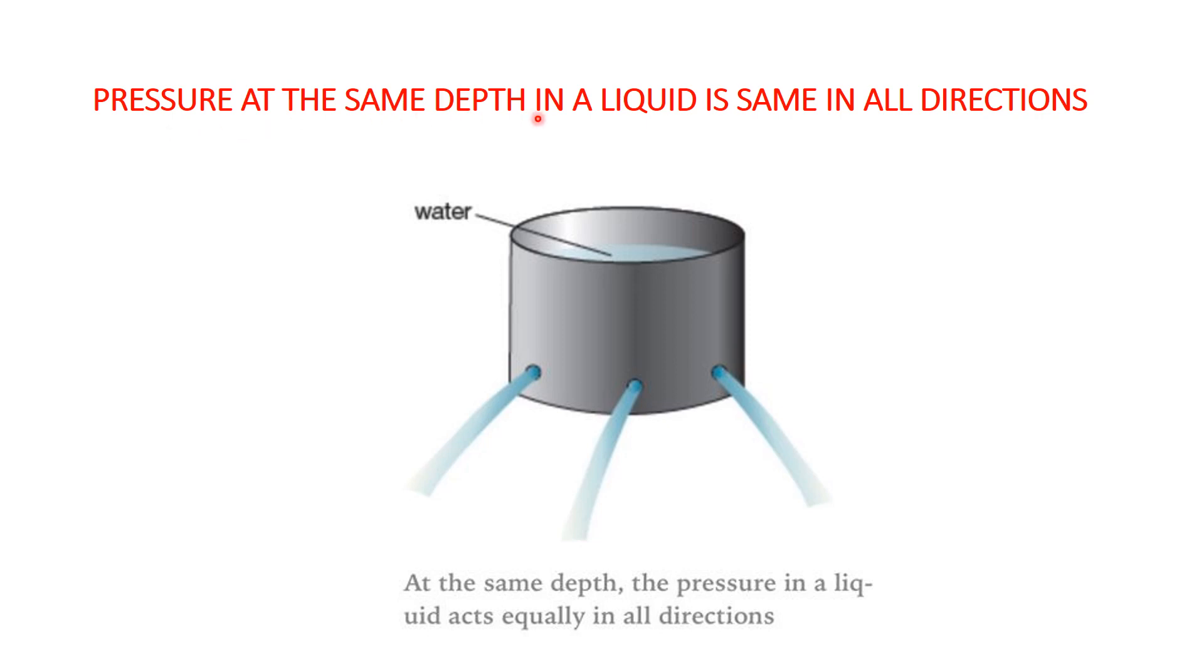Now the second activity shows that pressure at the same depth in a liquid is same in all directions. Take an empty tin can and make several holes round the tin can. Make sure that the holes are at the same size and at the same height. Plug the holes with plasticine and fill the tin with water.